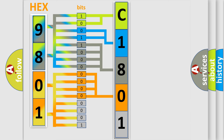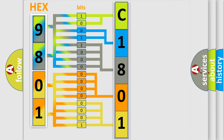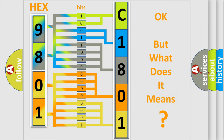A single byte conceals 256 possible combinations. We now know in what way the diagnostic tool translates the received information into a more comprehensible format. The number itself does not make sense to us if we cannot assign information about what it actually expresses.